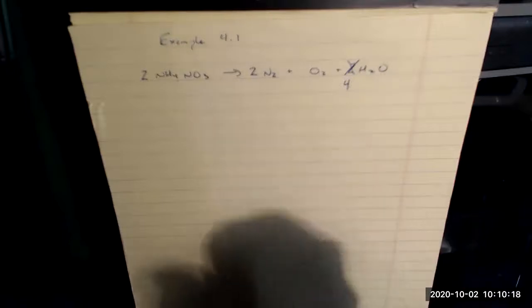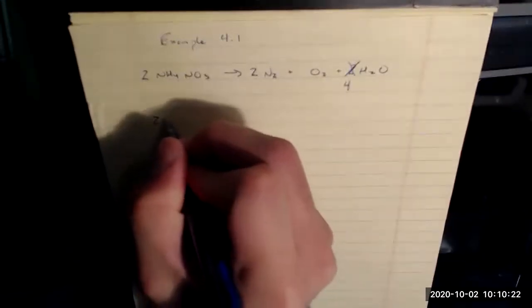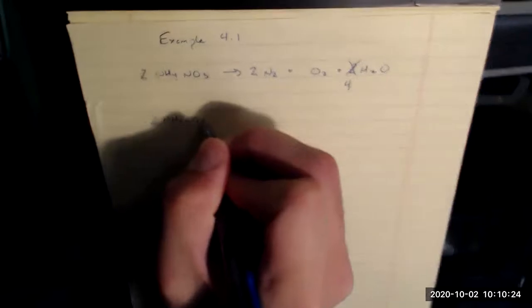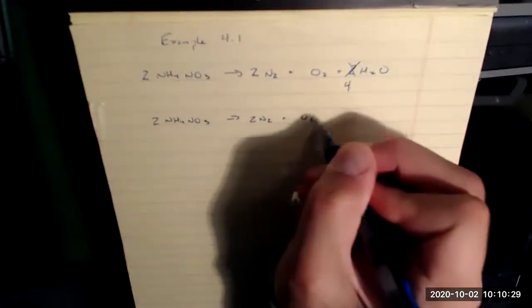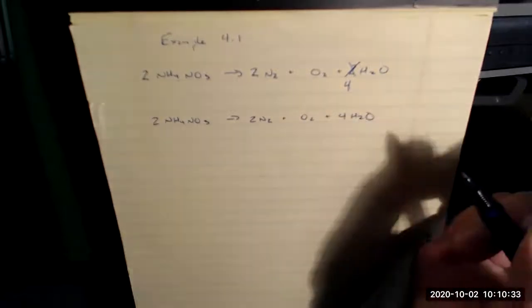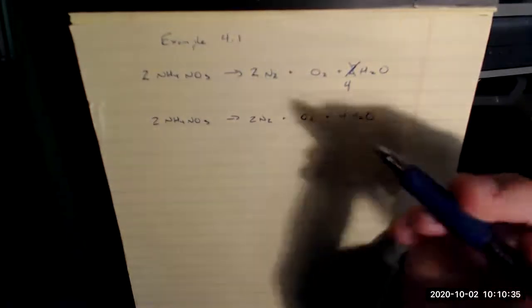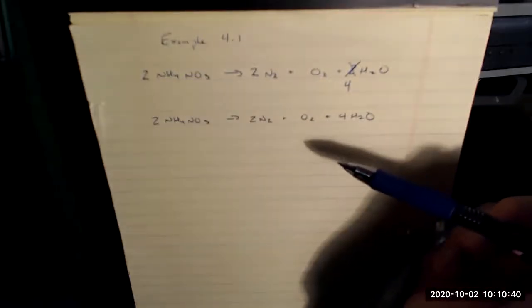So I rewrite everything that's left. I have two NH4 NO3, comes to two N2 plus O2 plus four H2O. I verify that I have the simplest ratio, two to two to one to four. I can't reduce that any further, so that's good.